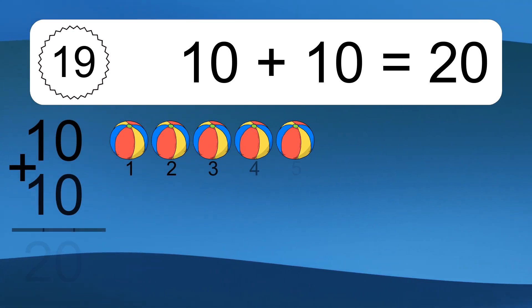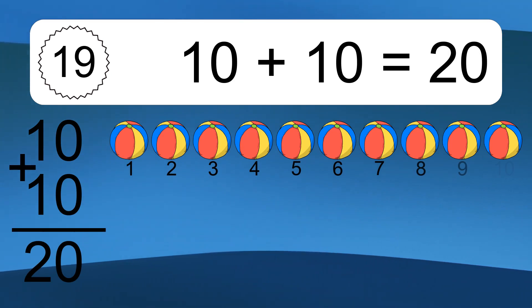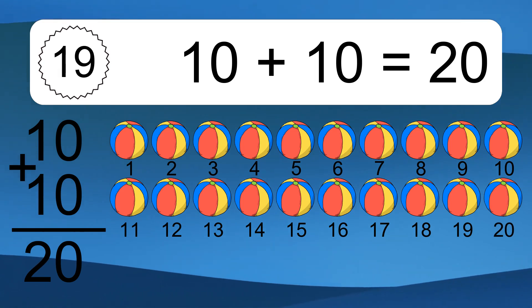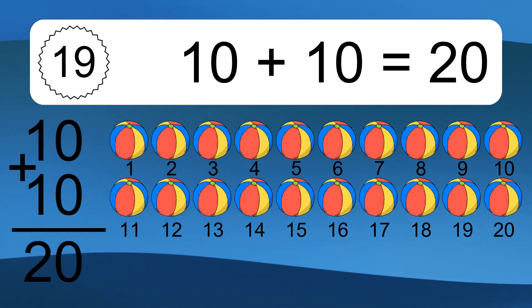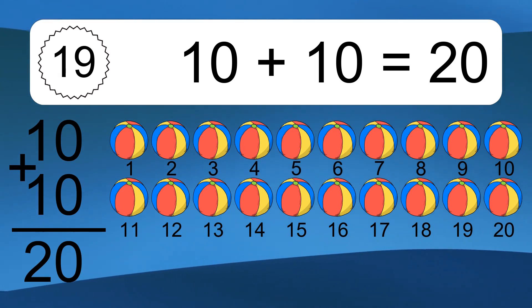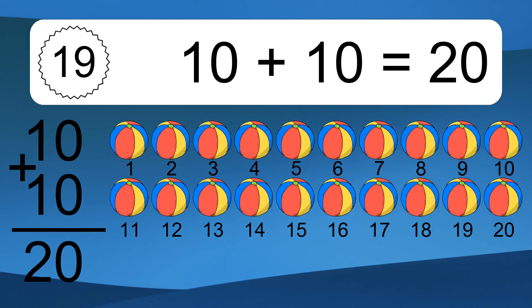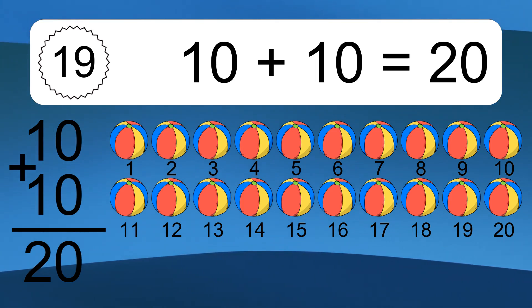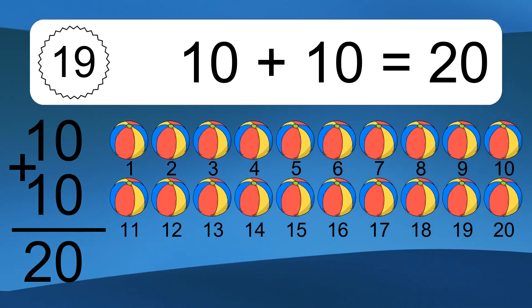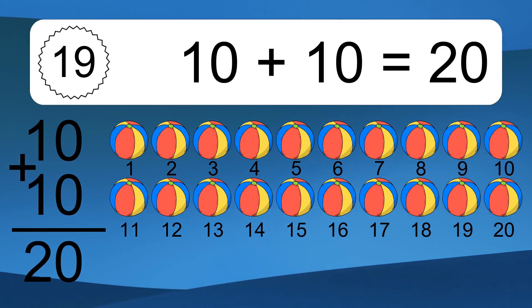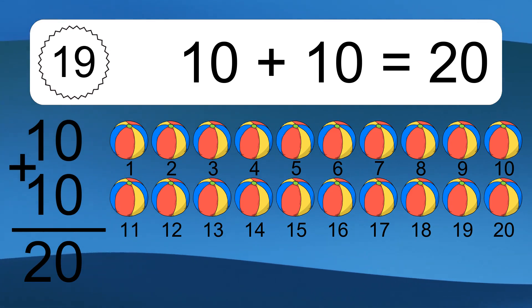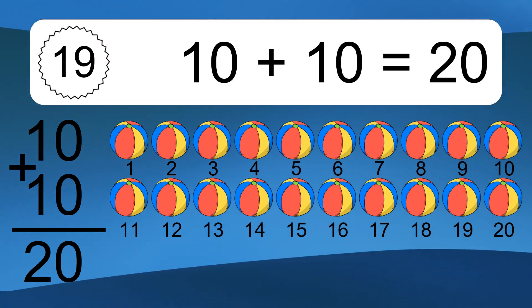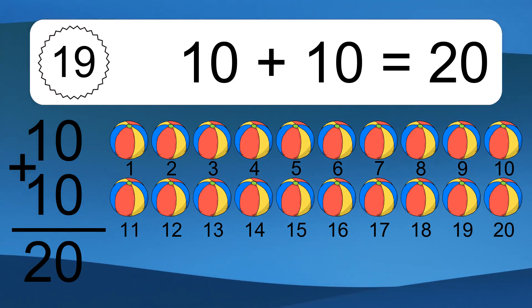10 plus 10 equals what? 10 plus 10 equals 20. Let's count it. 1, 2, 3, 4, 5, 6, 7, 8, 9, 10, 11, 12, 13, 14, 15, 16, 17, 18, 19, 20.